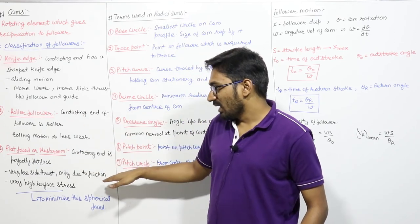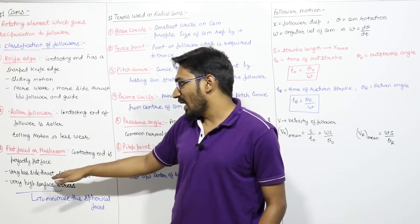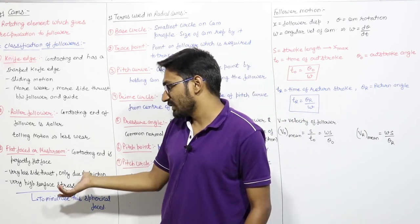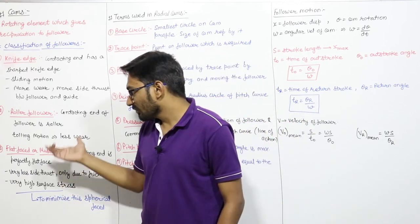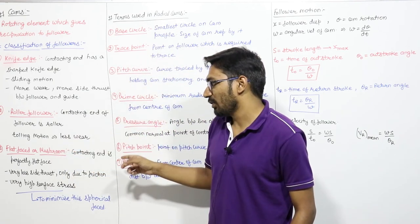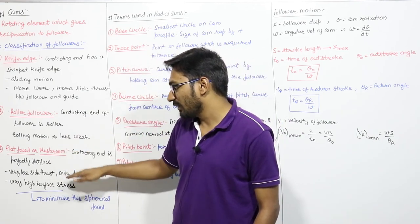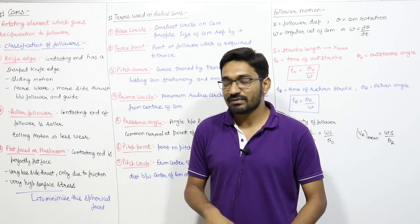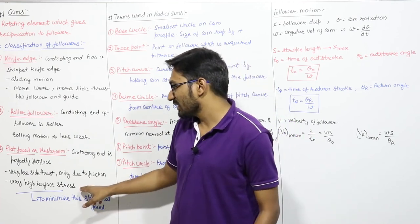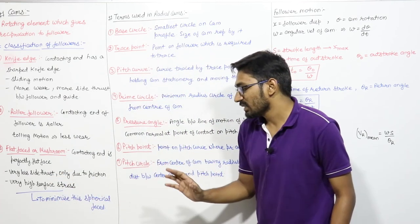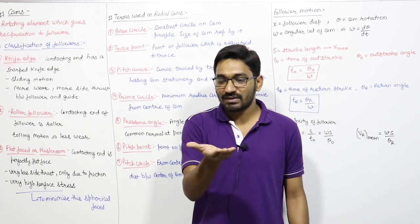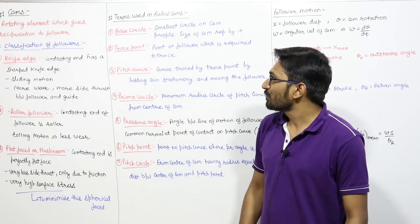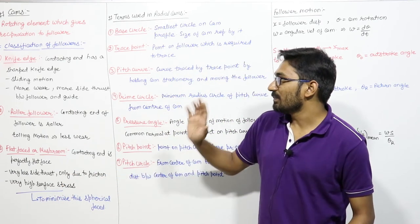The advantage of the flat faced follower is that side thrust is very less — basically only due to friction. The disadvantage is very high surface stress on the follower. To minimize this surface stress, we use a spherical faced follower, where the flat face is made spherical. In the spherical face follower, surface stress is less.